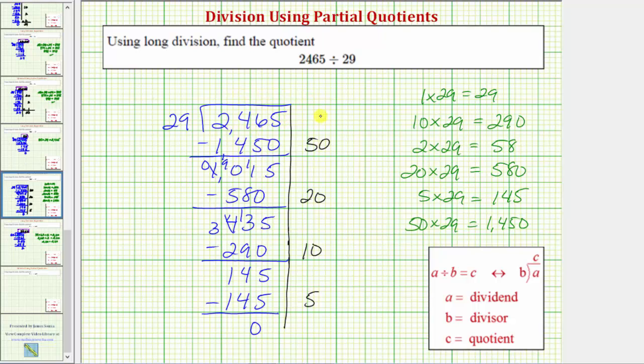To find our quotient, we sum the partial quotients. So 50 plus 20 plus 10 plus 5 equals 85. So our quotient is 85.